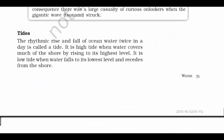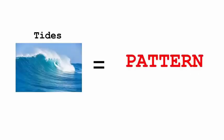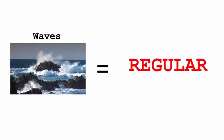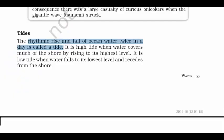On the other hand, tides are a bit different. The rhythmic rise and fall of ocean water twice in a day is called a tide. In a tide there is a pattern — it happens twice, thrice or four times in a day, and the waves are regular, occurring every now and then.